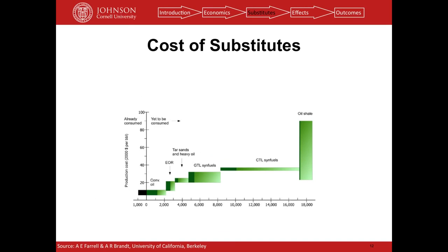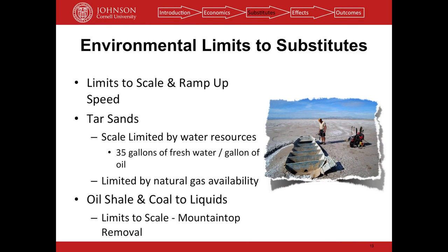All the alternatives to liquid transportation fuels — things like gas-to-liquid synth fuels, coal-to-liquids, and tar sands — all cost a lot more to produce. There are also environmental limits to substitutes. For tar sands, it uses about 35 gallons of fresh water for every gallon of oil produced at the Athabasca tar sands in Alberta. They draw water from the Peace River and are essentially reaching the limits of how much they can pull without running it dry. They're also limited by the amount of natural gas available to heat the tar sands.